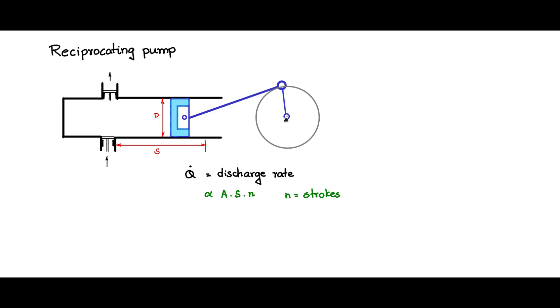Number of strokes per second is basically dependent on the speed of this wheel rotation. So A is pi by 4 D square into S into omega. So it is proportional to omega. D is constant fixed quantity, stroke length is a fixed quantity, omega is the only varying quantity. So you will see that Q dot is proportional to omega.